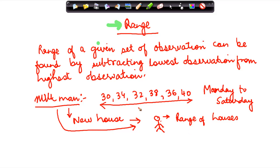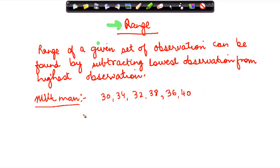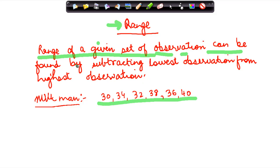The milkman told him how many houses he gives milk to every week. So, if he was asked to calculate the range of houses, the milkman wanted to know what is the range of customers — the number of houses he was serving during a particular week. Let us now see the definition: the range of a given set of observations can be found by subtracting the lowest observation from the highest observation.